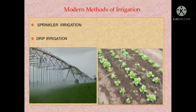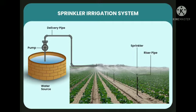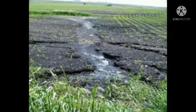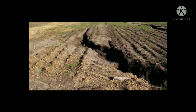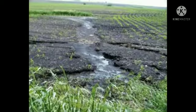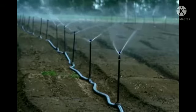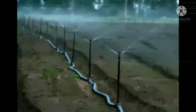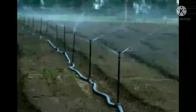The two main modern methods of irrigation are: first, the sprinkler system. The sprinkler system is a very good and efficient system, especially when sufficient water is not available or when the field is uneven. In this system, water gets sprinkled like rain over the plants.